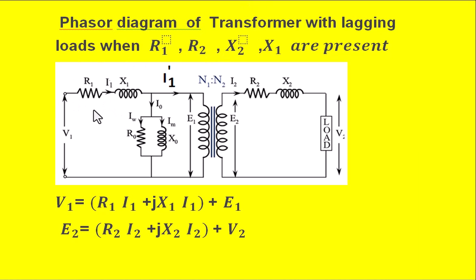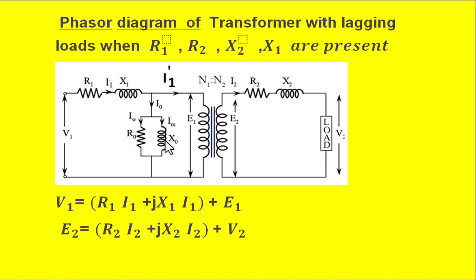First let us draw the equivalent circuit for the transformer. Here this is the primary winding, this is the secondary winding, and this is the primary applied voltage. This is the primary winding resistance R1 and this is the primary winding leakage reactance X1. The current drawn by the primary winding is I1, and here is the no-load current I0, represented by two parallel components. One is the core loss component R0 carrying current IC (or IW), and the other is X0 which draws the magnetizing current responsible for flux production in the core of the transformer.